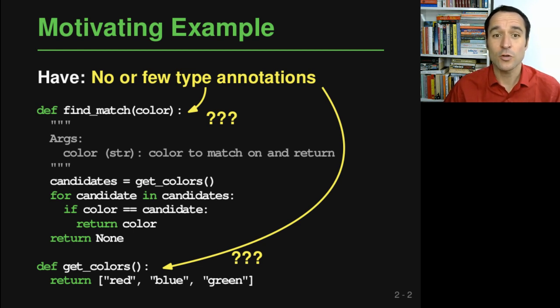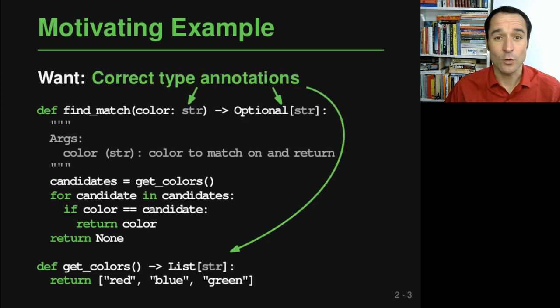So you, for example, do not know if you statically reason about this code what parameter type this parameter called color should have, or what the return type of this function getColors actually is. Now what you instead want to have are correct type annotations that are correct in the sense that if you add these annotations, your program type checks, which means that everything is consistent.